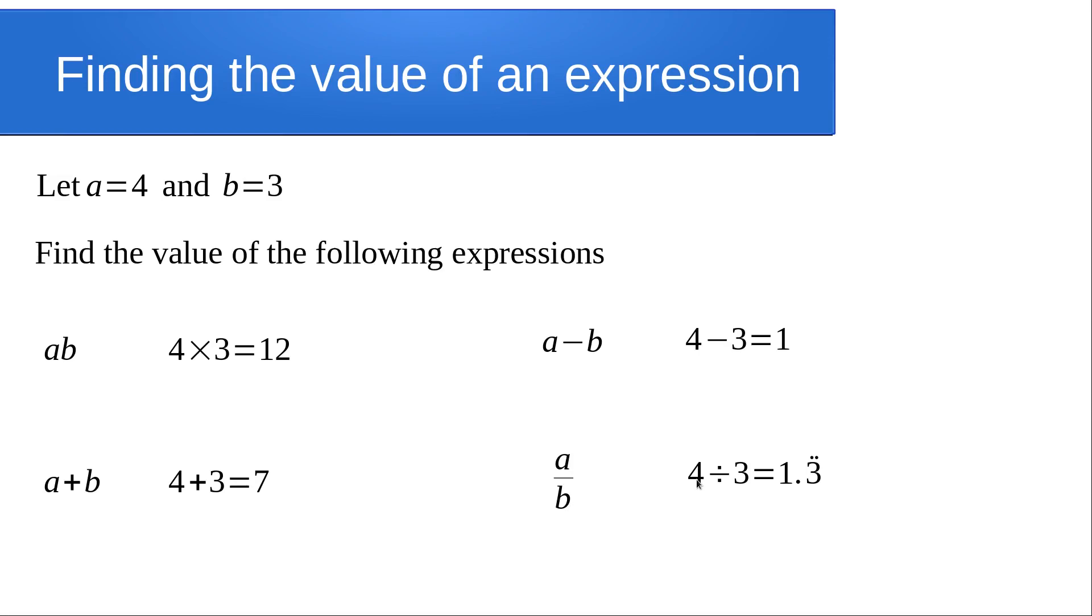Here we've got a over b with the particular values, so we get 4 divided by 3. We know that means division, and that's going to give us 1.3 recurring. You could of course leave that as 4 over 3 as a top-heavy fraction as well.